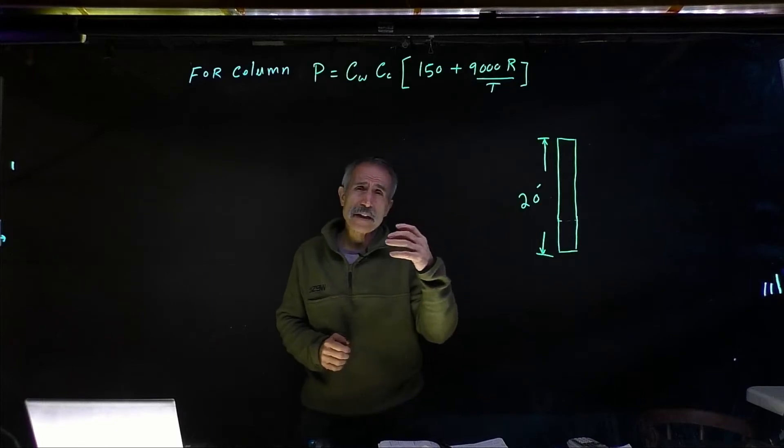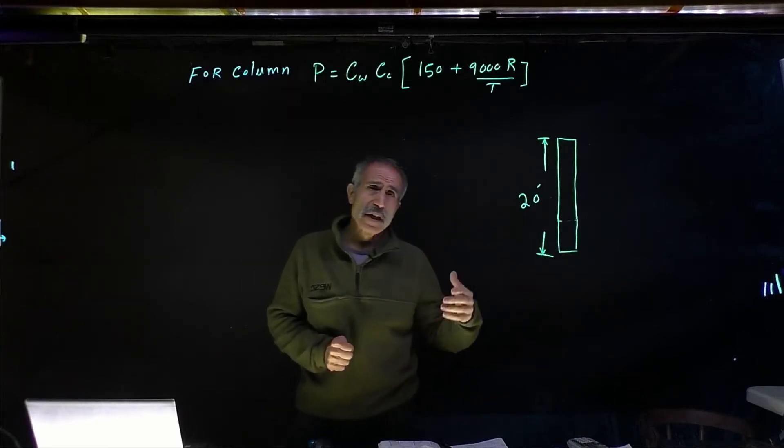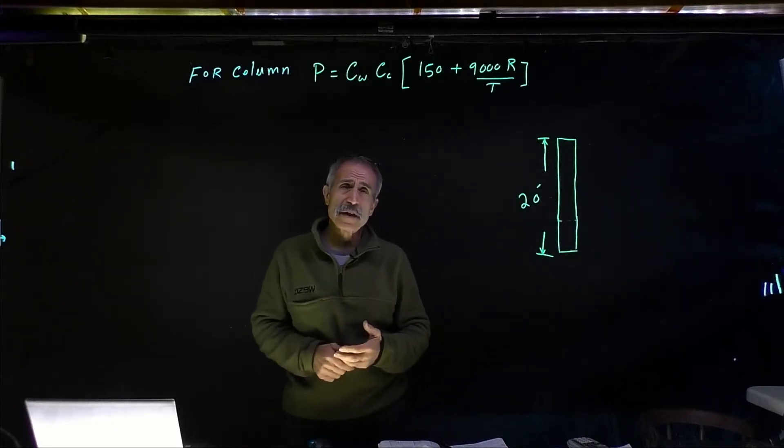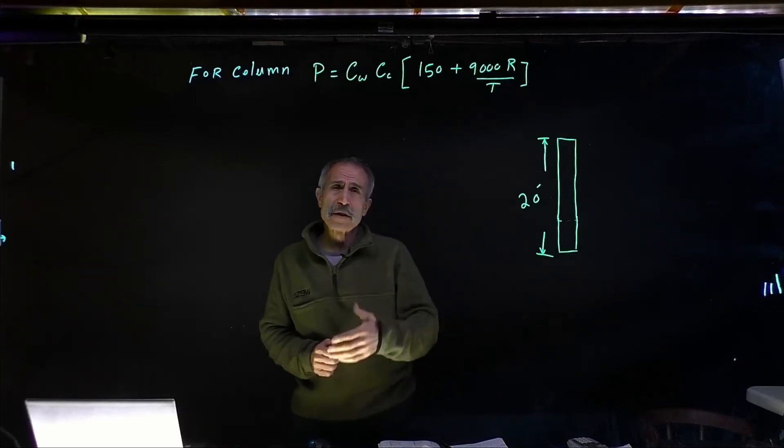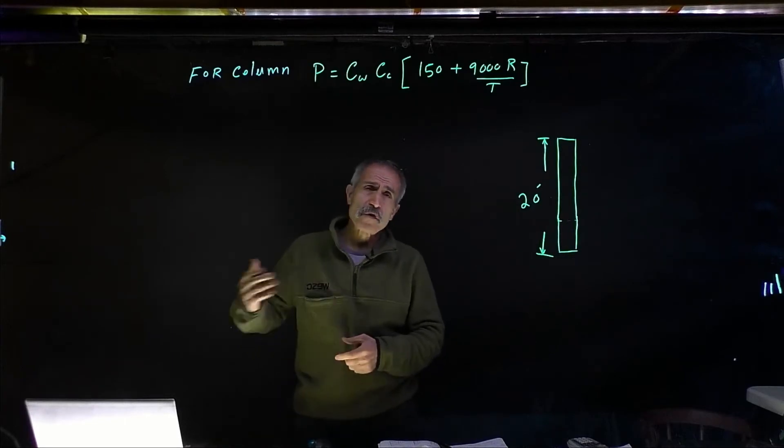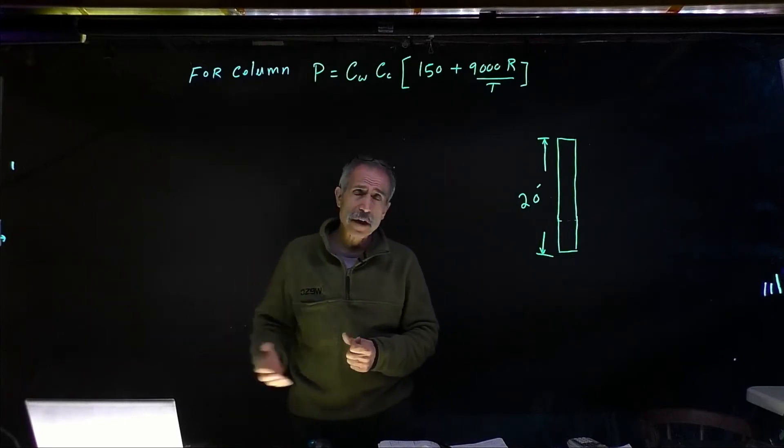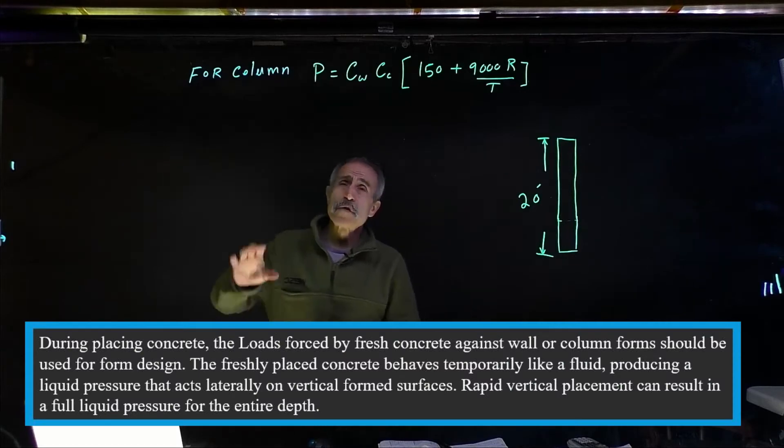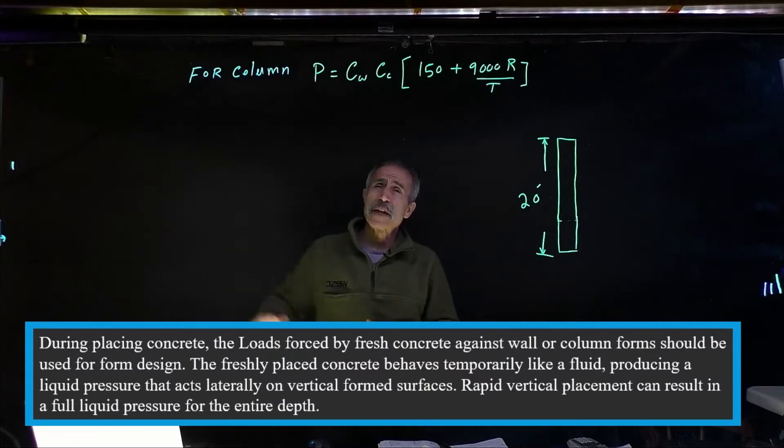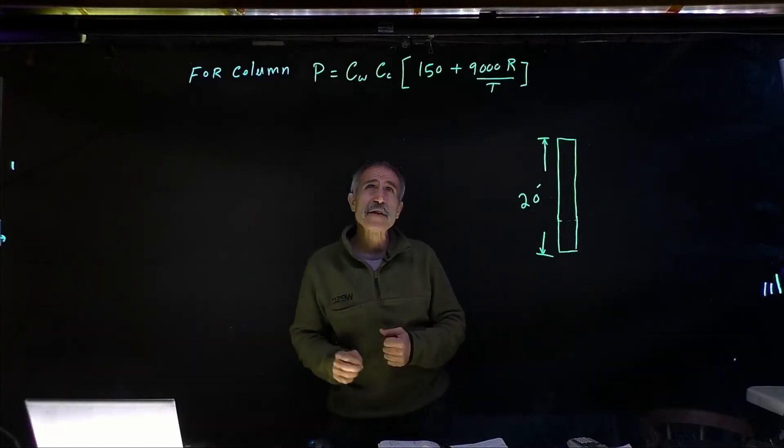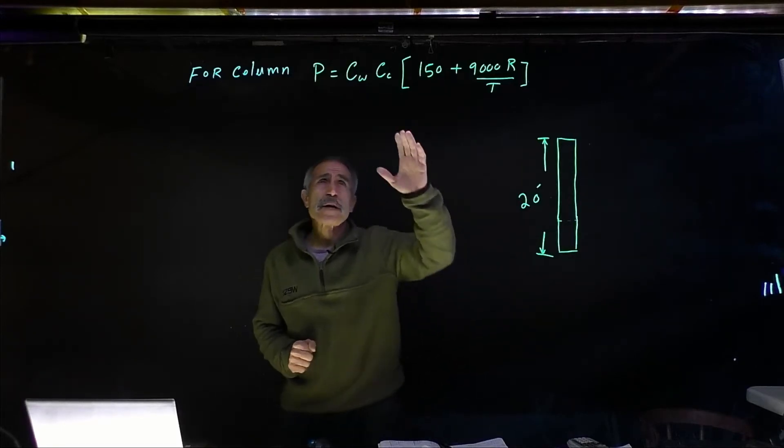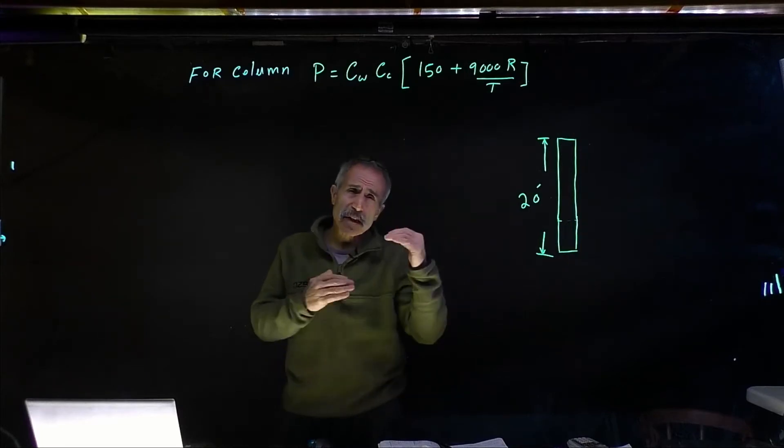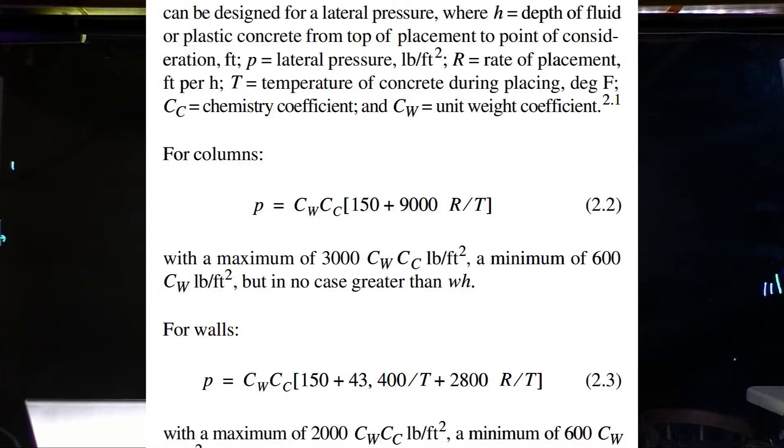So how are we going to calculate how much pressure is, all based on the temperature at the time you're placing the concrete and the rate that you're using for the placement. Is it 4 feet per hour, 5 feet per hour, 10 feet per hour? What is the rate you are using? So for column, if you look at the ACI 347, it has the code on it and the pressure is given by this equation but of course it has a limitation of minimum and maximum that we have to double check. So let's get to work and do this.